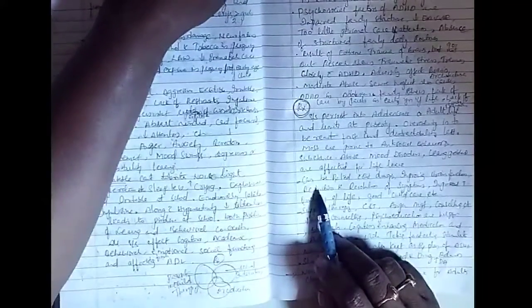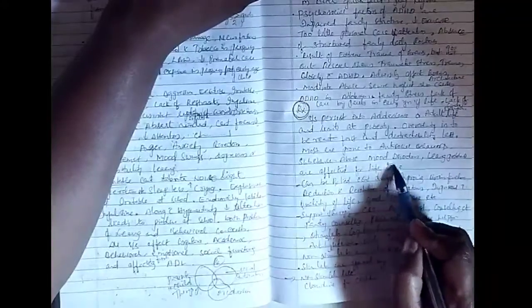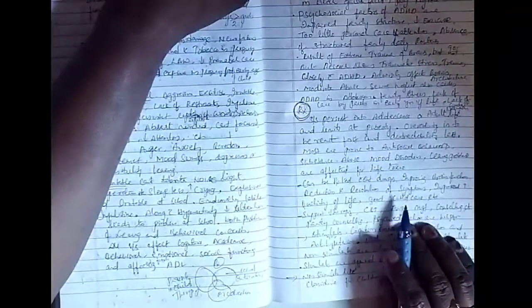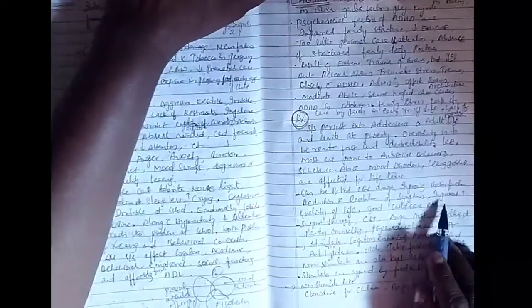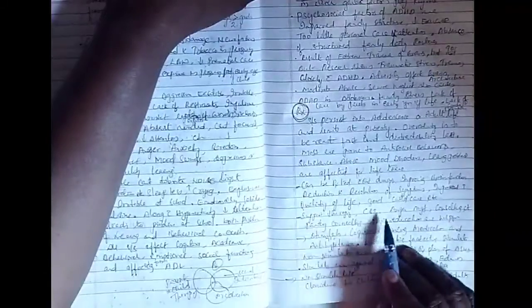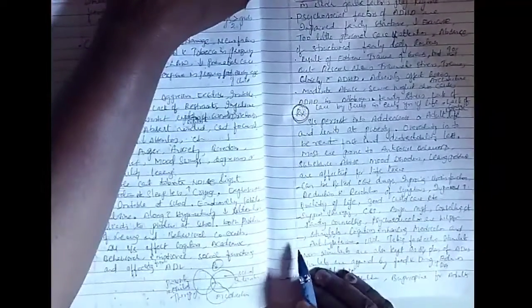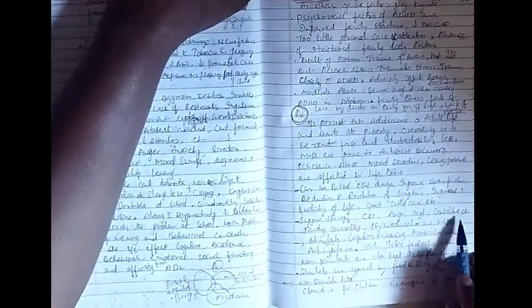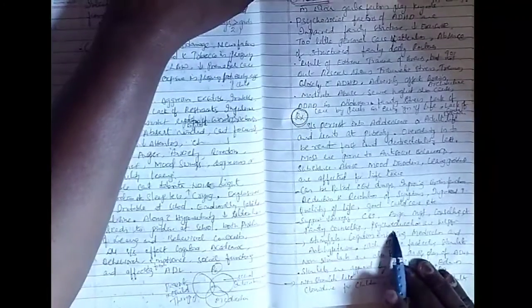These are all affecting the child for lifetime if they are not treated. They can be treated without even drugs by improving the brain function and reduction and resolution of the symptoms, improved quality of life, good child care. Supportive therapy, CBT that is cognitive behavioral therapy, anger management therapy, counseling the client and family members, psychoeducation.